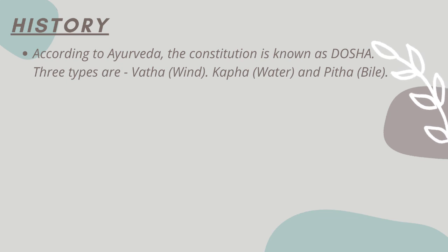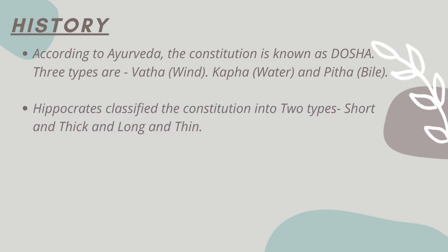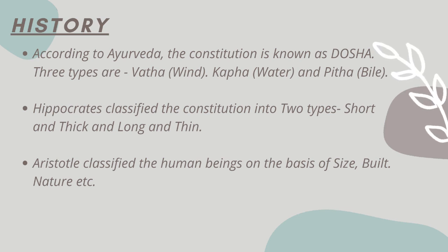Now let's know about the history of constitution. According to Ayurveda, the constitution is known as dosha. Three types are vat, pith, and kauf. Hippocrates classified the constitution into two types: short and thick, and long and thin. Aristotle classified the human beings on the basis of size, built, and nature.